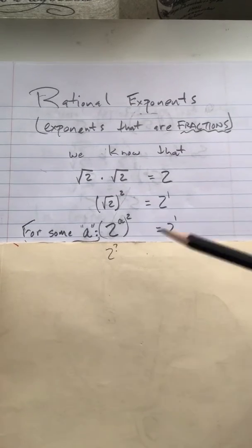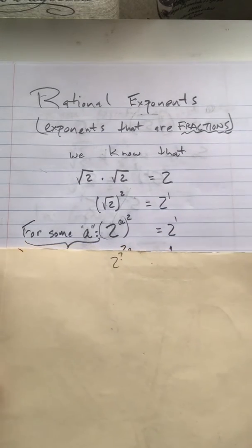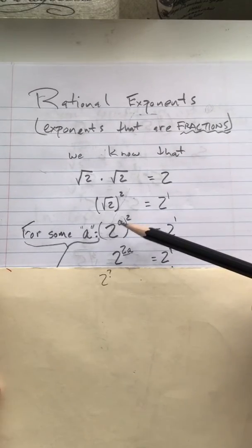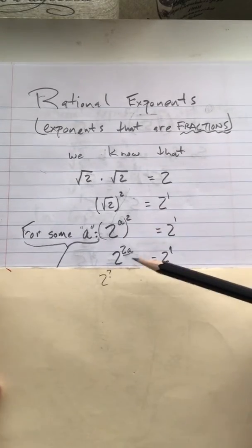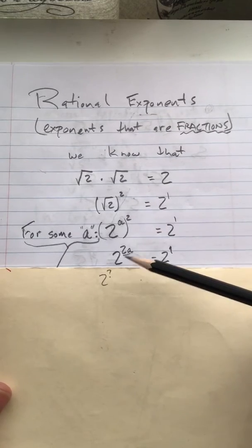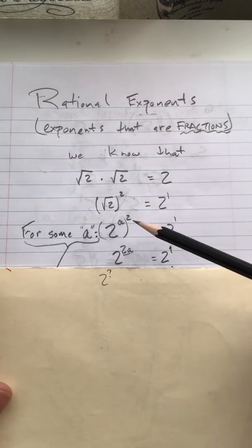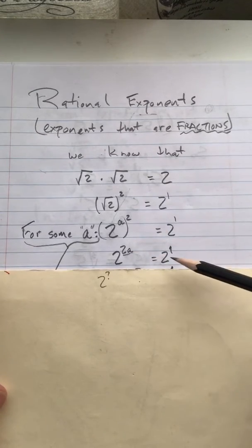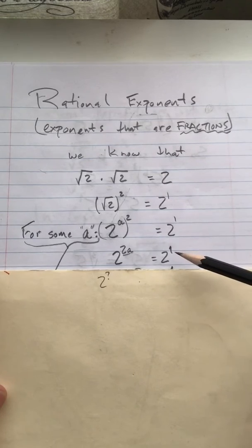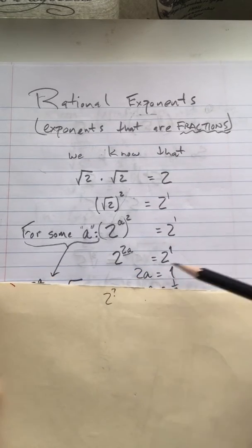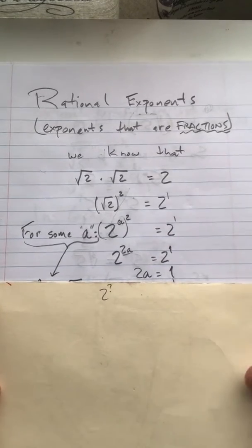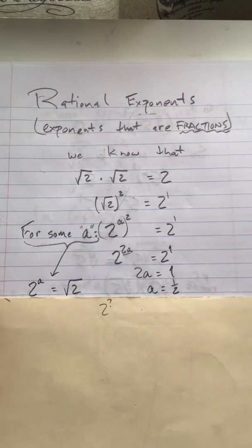Alright, so you probably remember something from your laws of exponents: when you take a number raised to a power, like 2 to the a, and then raise that to another power, you can simplify that by just multiplying the two exponents together. So, 2 to the a squared equals 2 to the 2a, and if 2 to the 2a equals 2 to the first over here, then that must mean that 2a equals 1. So, solving for a is easy, and we just get a equals 1 half.